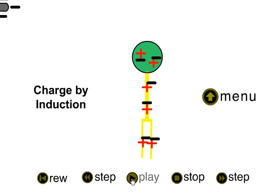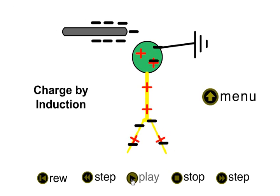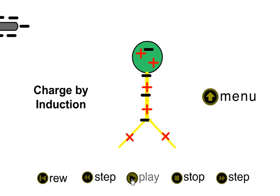In this case, we put the charged rod close to the electroscope. We earth it by touching the electroscope. Then we remove the charged rod and now we have a net positive charge. The net positive charge means that we have repulsion, and the vanes move away from each other.